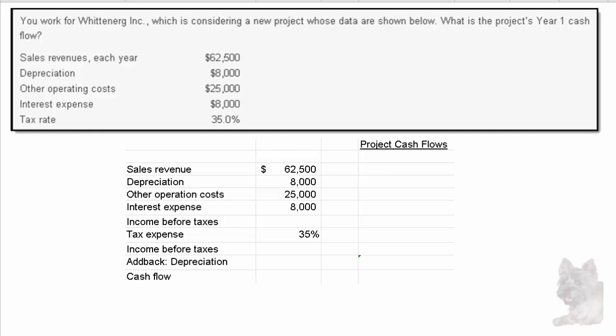Let's explore this cash flow question problem. Here's the information — you see it at the top part of the screen. You work for Wittenberg Inc., which is considering a new project whose data are shown below. What's the project's year one cash flow?